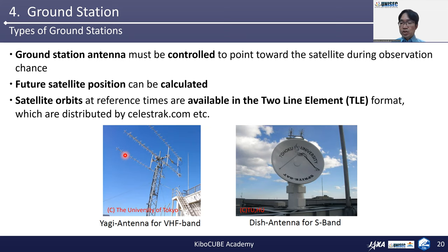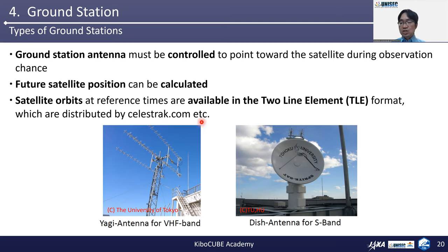These antennas are controlled to the direction of the satellite position during a 10-minute observation window and are moved to follow the estimated direction. Future satellite positions can be calculated. Satellite orbits at reference time are available in the format of two-line elements — we call it TLE. This is distributed by a public site such as celestrak.com. All space objects are being monitored and their orbits are open to the public.